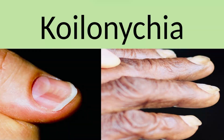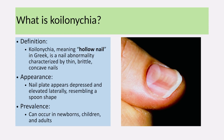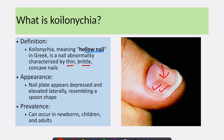In this video we'll discuss koilonychia and then we'll see a video of a patient with koilonychia. Koilonychia in Greek means hollow nail, and it's the abnormality of the nail characterized by thin, brittle, and concave nails as shown in this picture. The nail plate appears depressed and elevated laterally, resembling a spoon shape.